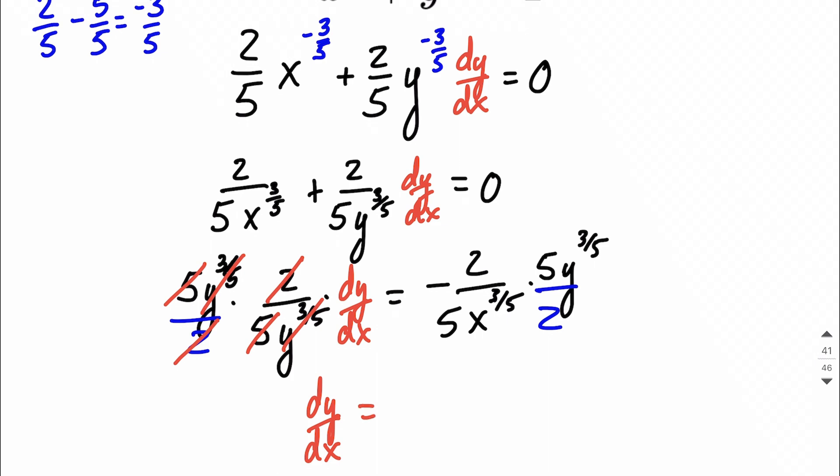Let's think about what we end up with on the right-hand side. Well, we have a 2 in the numerator, 2 in the denominator, so those are gone, right? 2 over 2 makes 1. We have 5 in the numerator, 5 in the denominator, 5 over 5 makes 1. So what remains? Well, we have a negative from out in front. We have a y to the positive 3 over 5 in the numerator, and we have an x to the positive 3 over 5 in the denominator.